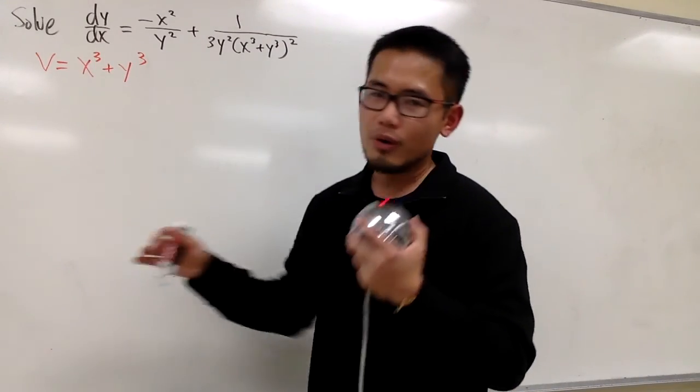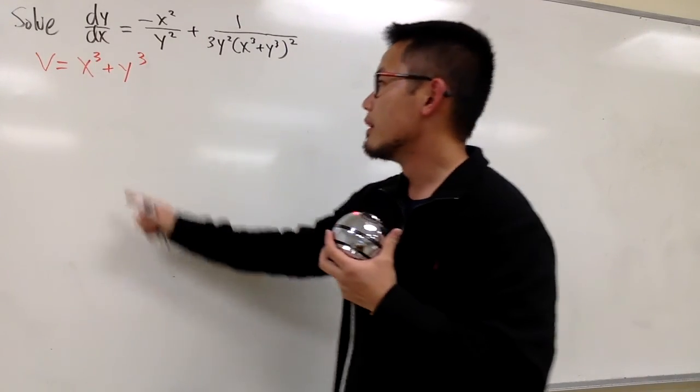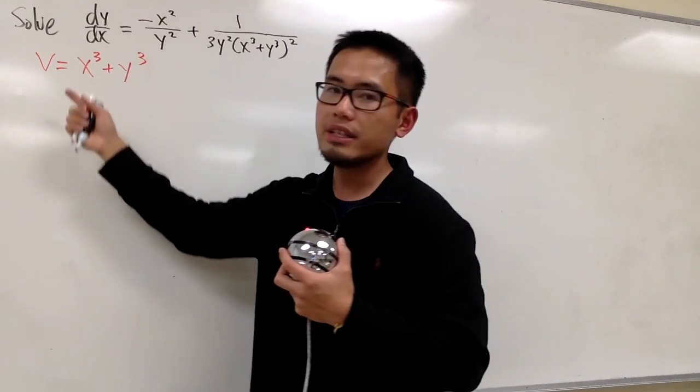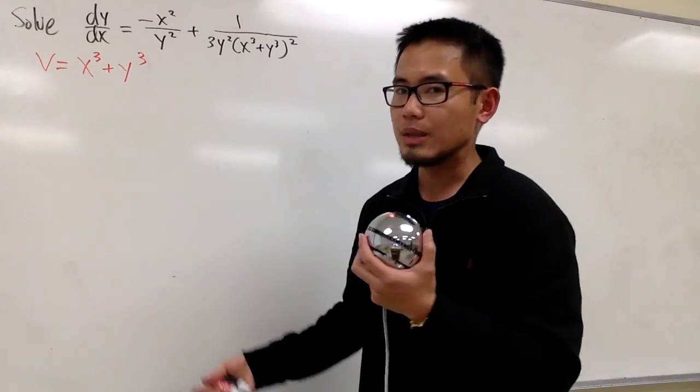this is a good old integral that you guys should know how to do. Anyways, here we go. Hopefully everything works out nicely, right? But I still have to do it with the usual approach. That means I have to get dy dx in terms of dv dx and some x, some y maybe.